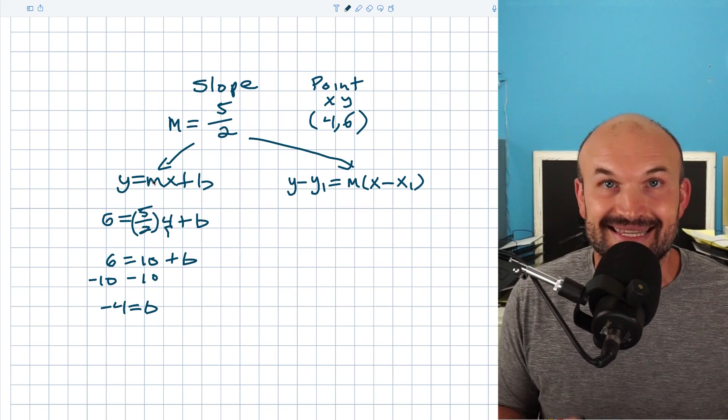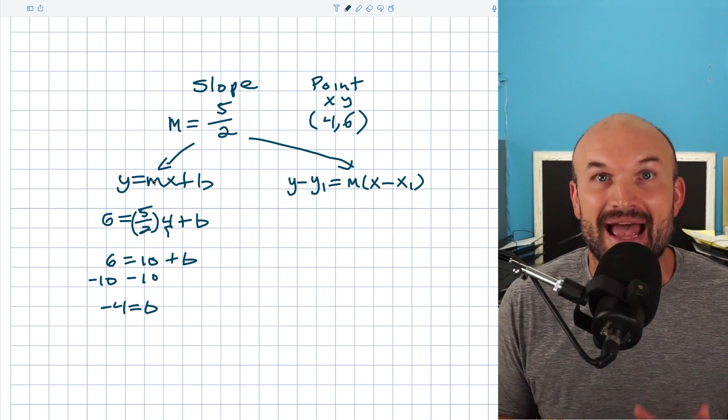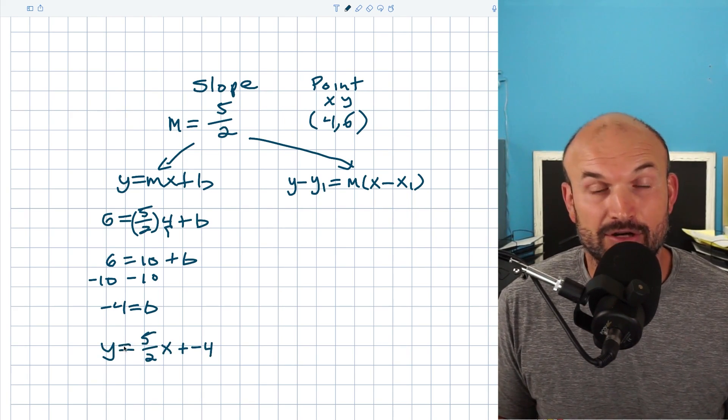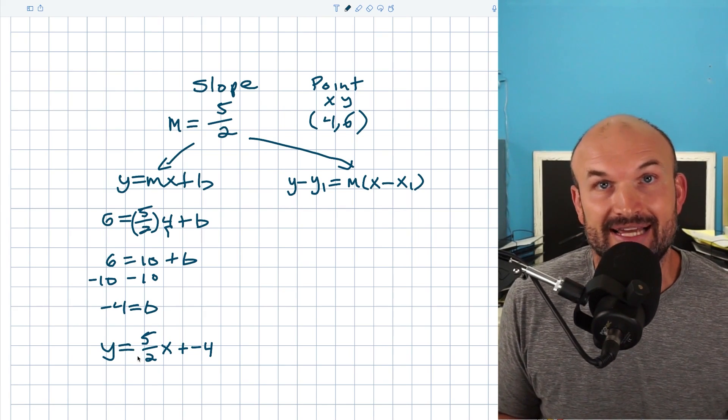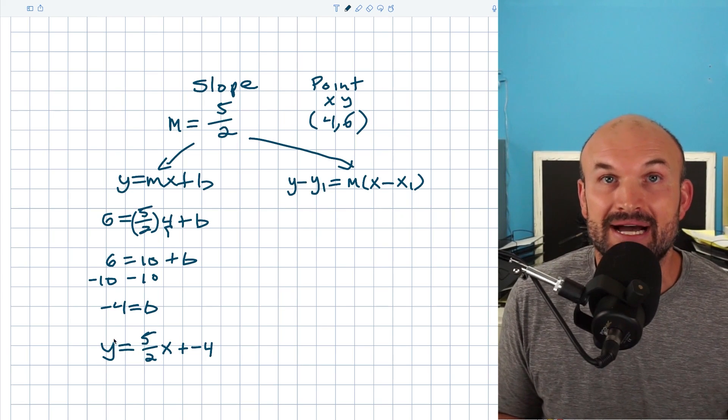That represents the equation of the line. So we want to keep them as y's and x's. Therefore, you can see that we're going to have an equation of y equals five halves x plus a negative four, which we can just simplify into y equals five halves x minus four.